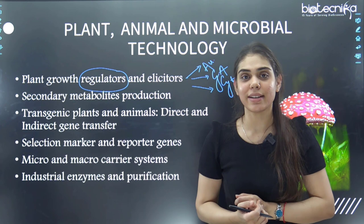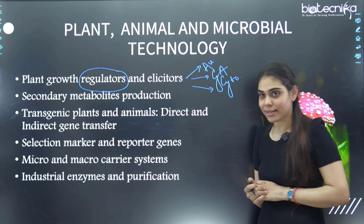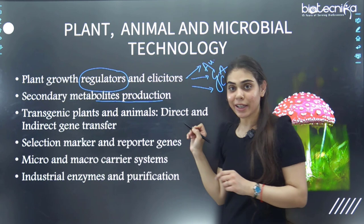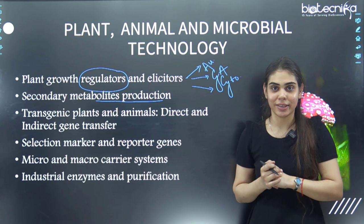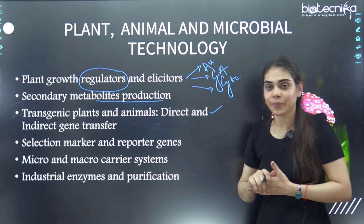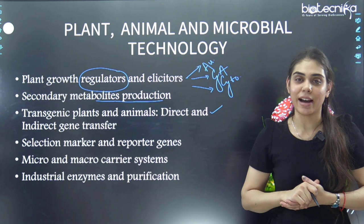Next is secondary metabolite production, which includes terpenes and phenolics — their functions and classes. Third is transgenic plants and animals, a simple topic where questions are asked every time. What are the direct and indirect gene transfer methods? Very simple — have at least one glance.